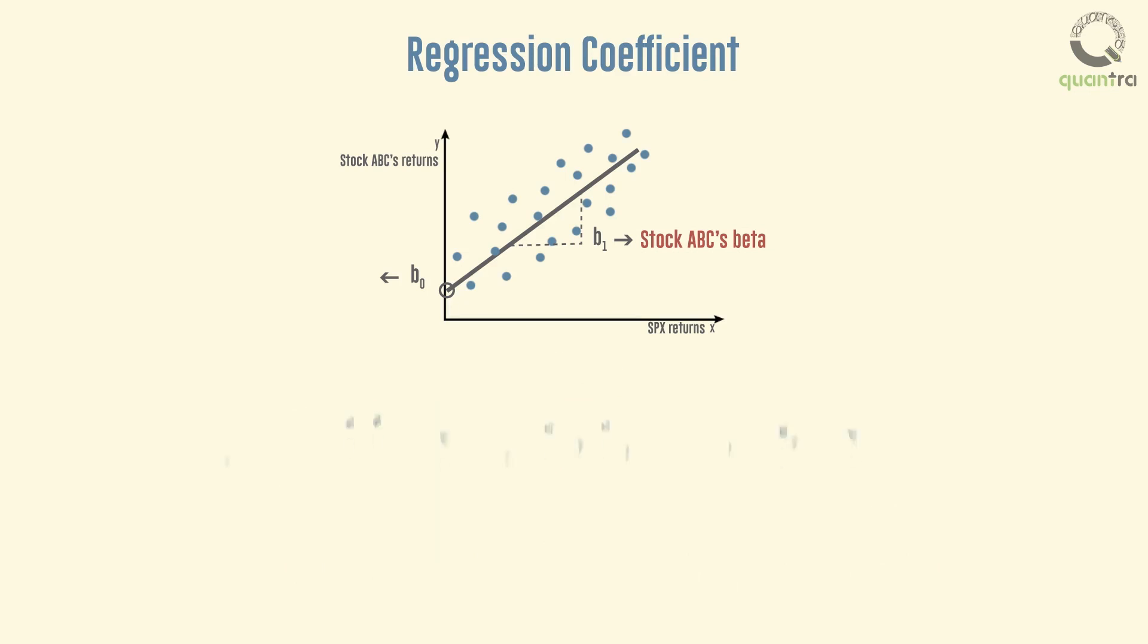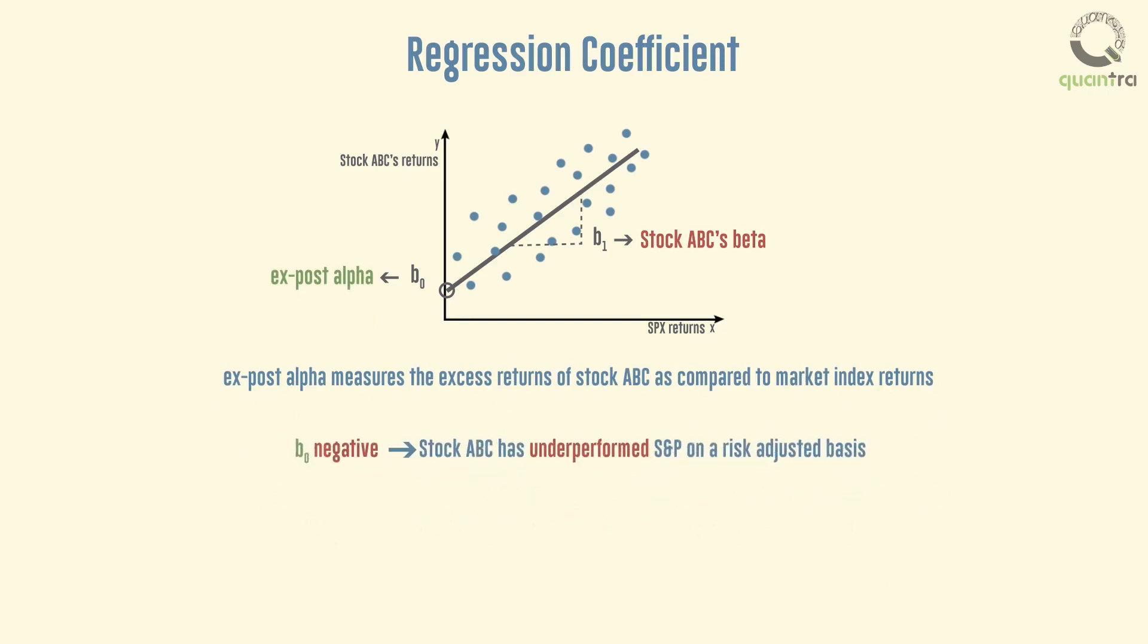The intercept term is the ex-post alpha, that is, the measure of excess returns of stock ABC as compared to market index returns. If the intercept term is negative, it means ABC has underperformed S&P on a risk-adjusted basis, and a positive intercept means it has had excess returns on risk-adjusted basis.